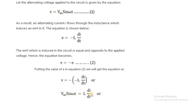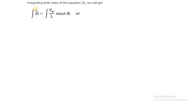To find out the current i, we rearrange the terms, taking di to the LHS so that L goes to the denominator: di equals Vm upon L sin omega t dt. Taking the integration of both sides, integrating di equals integration of Vm upon L sin omega t with respect to d omega t. The value of i becomes Vm divided by L, and the integration of sin omega t gives minus cos omega t divided by omega.